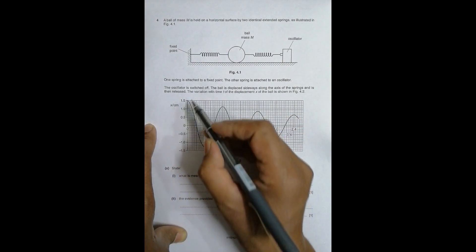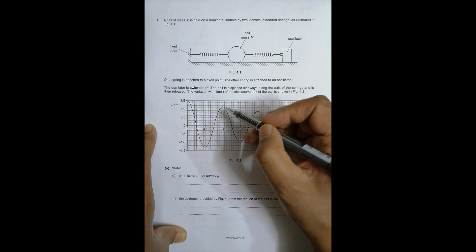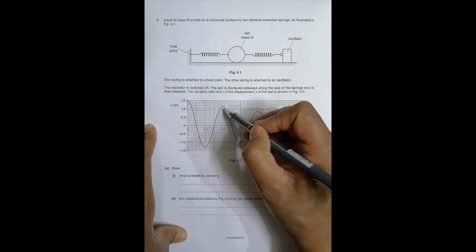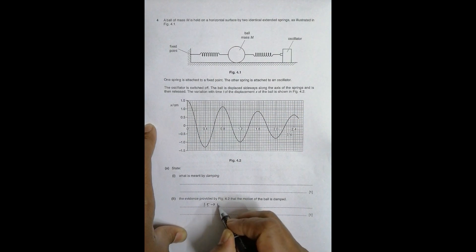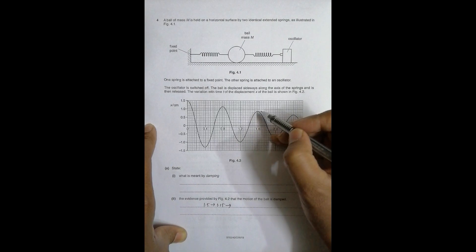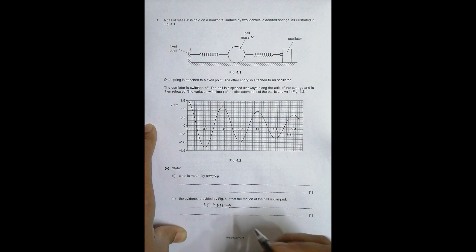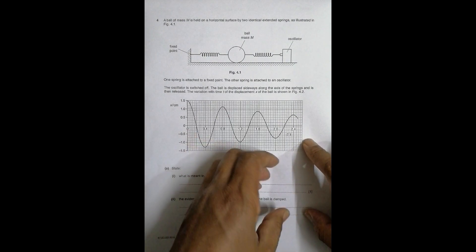Initially, the first amplitude was 1.5 cm. When the ball returns to the same position, the amplitude has become 1.15 cm. Then it becomes 0.85 cm, and so on. So the amplitude is decreasing over time, which means the ball is damped.